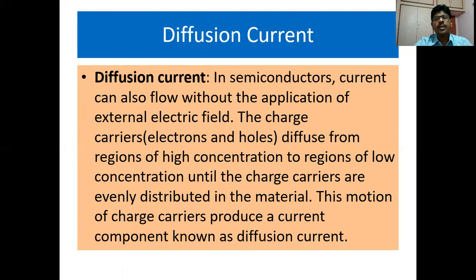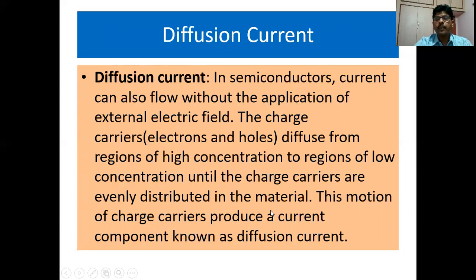Next we shall see what is diffusion current. In semiconductors, current can also flow without the application of an external electric field. The charge carriers — electrons and holes — diffuse from regions of high concentration to regions of low concentration until the charge carriers are evenly distributed in the material. This motion of charge carriers produces a current component known as diffusion current.